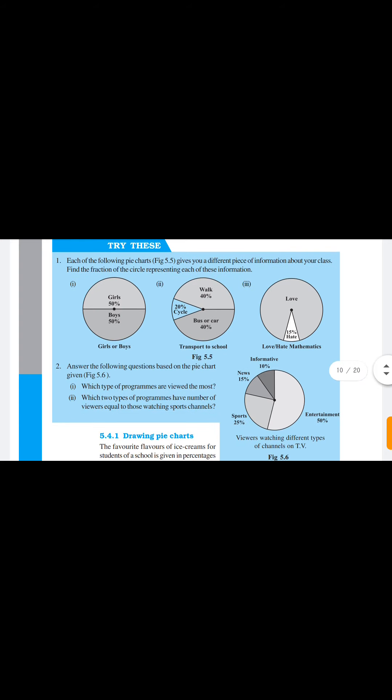In the second graph, transport to school: walk is 40 percent, so walk equals 40 upon 100, which gives 2 by 5 after cancelling. Cycling is 20 percent, so 20 upon 100 gives 1 by 5. Bus or car is 40 percent, so bus or car fraction is 40 upon 100, which is 2 by 5 again.